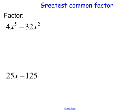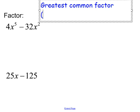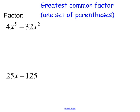Let's go over greatest common factor first. These are two separate problems. Whenever you're going to do greatest common factor, you need one set of parentheses. So to factor 4x to the fifth minus 32x squared, I'm going to write one set of parentheses.